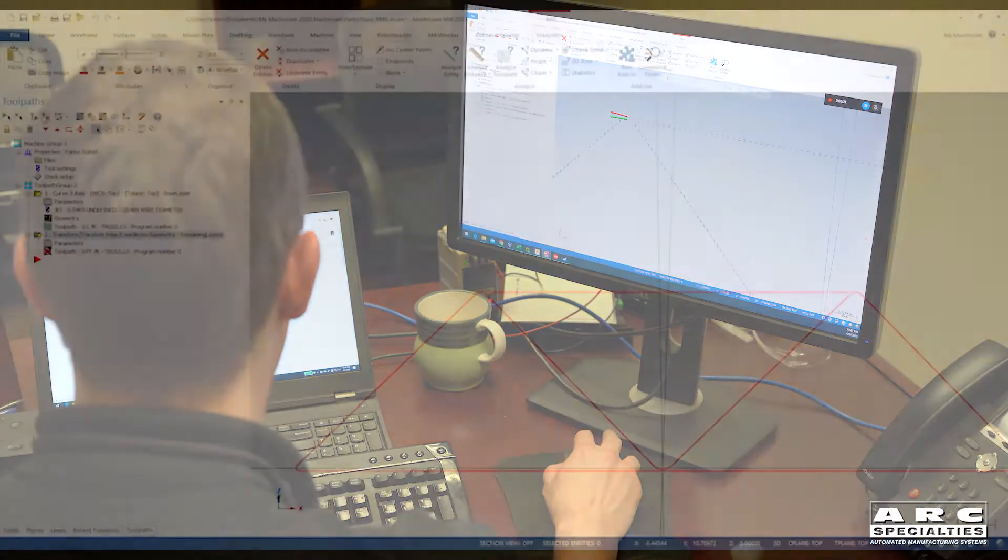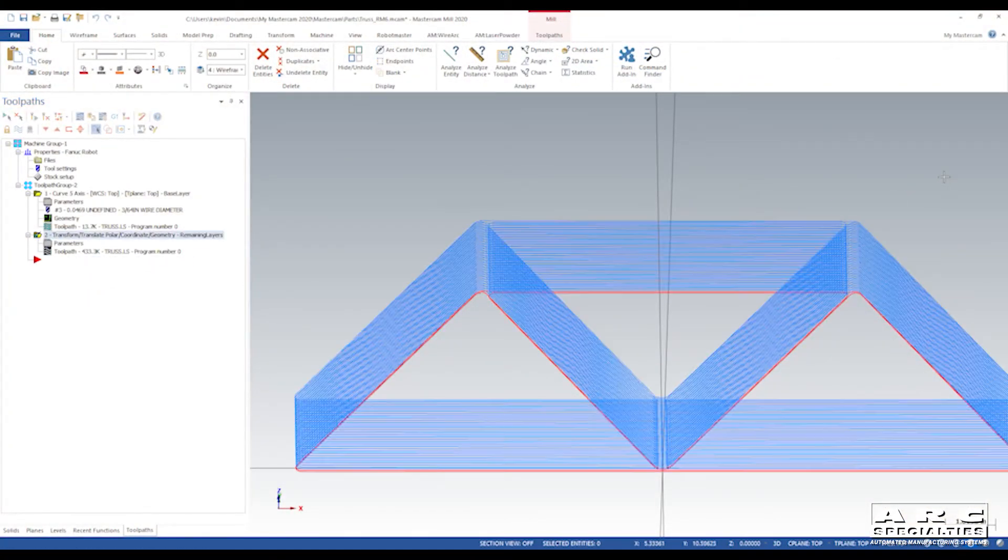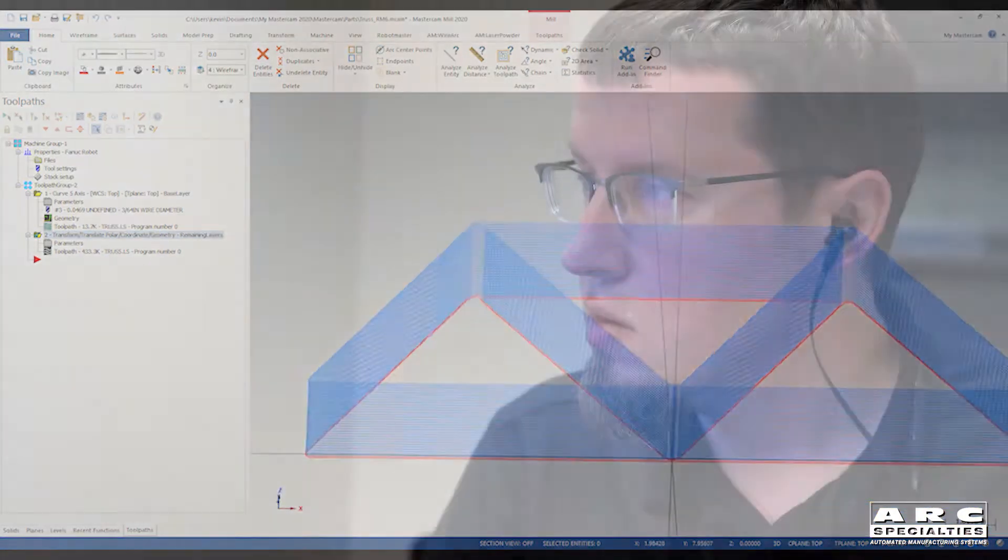One thing we've learned is if we can avoid breaking and then restarting the arc, we typically get a better part. So in this case, Kevin's come up with a way to weld this part without ever breaking the arc.